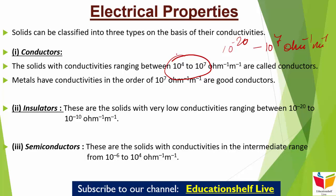दूसरी category है insulators — ये वो solids होते हैं जिनकी बहुत ही कम conductivity होती है: 10^-20 से लेके 10^-10 per ohm per meter। मतलब positive range में तो इनकी conductivity आती ही नहीं। और last type होते हैं semiconductors — इनकी conductivities intermediate यानि बीच की range में आती हैं, 10^-6 से लेके 10^4 per ohm per meter तक।